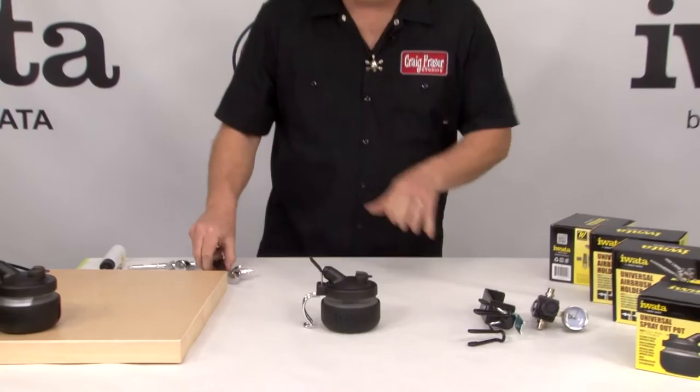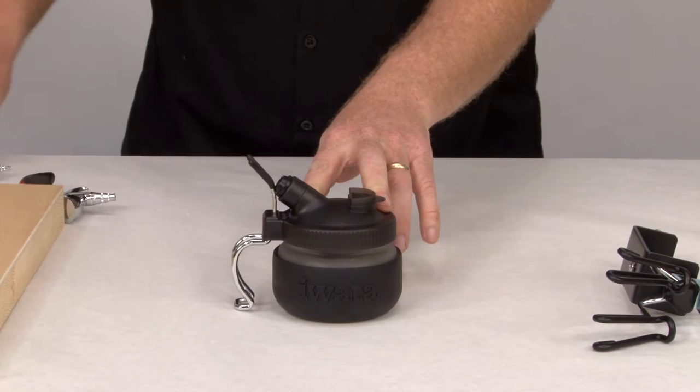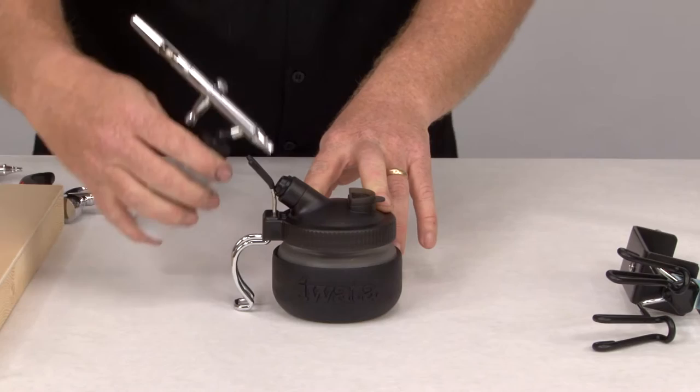You can fit just about any of the brushes. The trigger model goes in there nicely. You've got the gravity feed, fits in there really nice. And now you can even put the bottle feed in there. Very cool product.